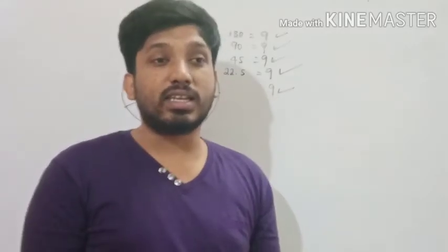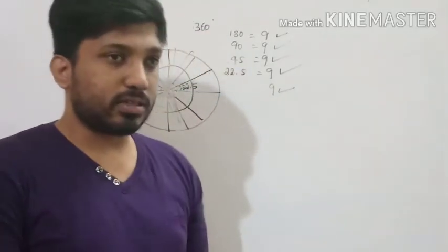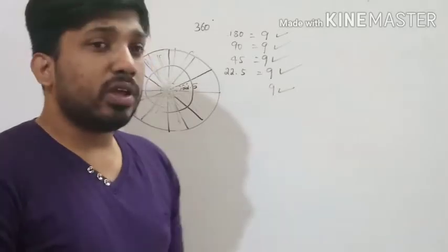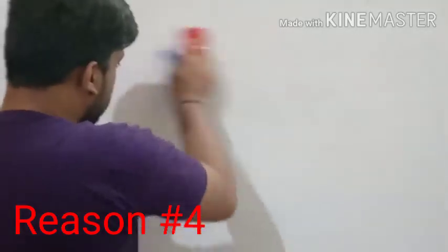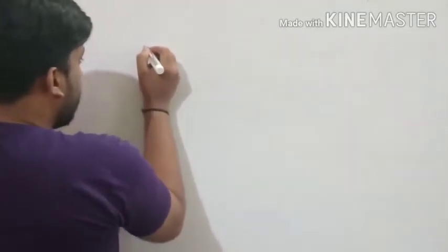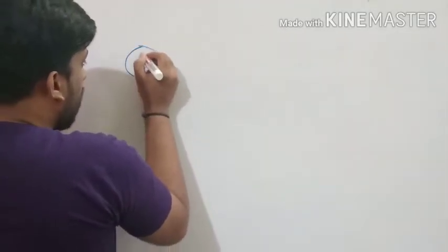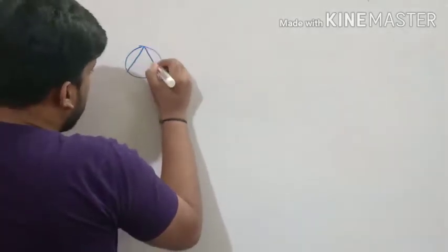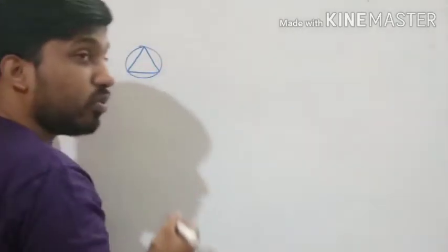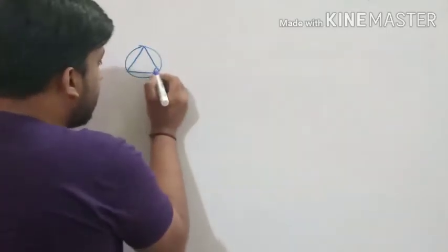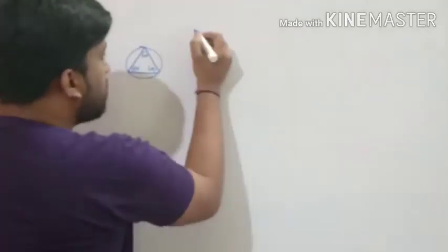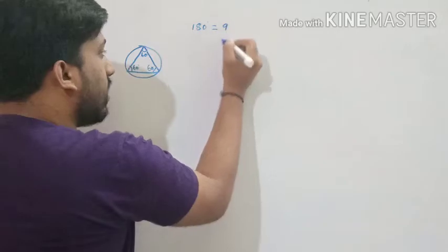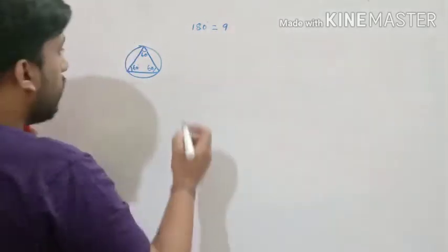The fourth reason: if you consider a circle and draw a triangle — a polygon — inside it, the sum of interior angles of a triangle is 60+60+60, so 60×3 = 180. Add the digits: 1+8+0 = 9. Now inscribe a square or quadrilateral in the circle: 90+90+90+90, so 90×4 = 360. Again the digit sum is 9.